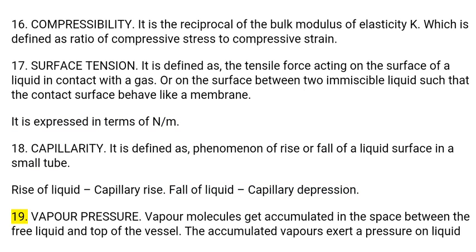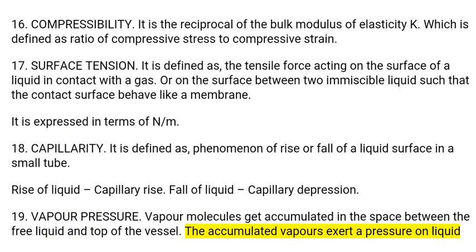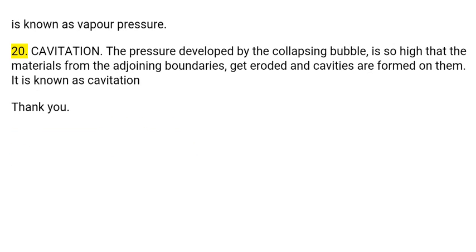19. Vapor pressure: Vapor molecules get accumulated in the space between the free liquid surface and top of the vessel. The accumulated vapors exert a pressure on the liquid, which is known as vapor pressure. 20. Cavitation: The pressure developed by the collapsing bubble is so high that materials from the adjoining boundaries get eroded and cavities are formed on them. This is known as cavitation.